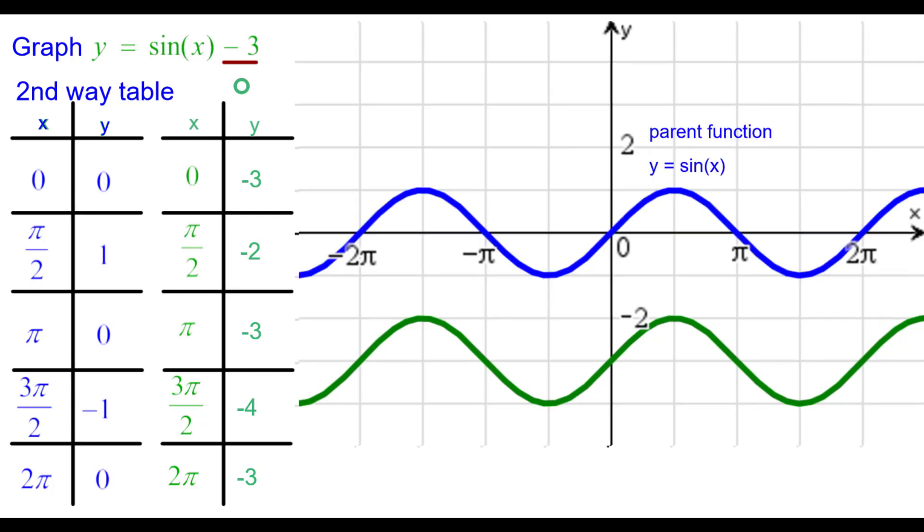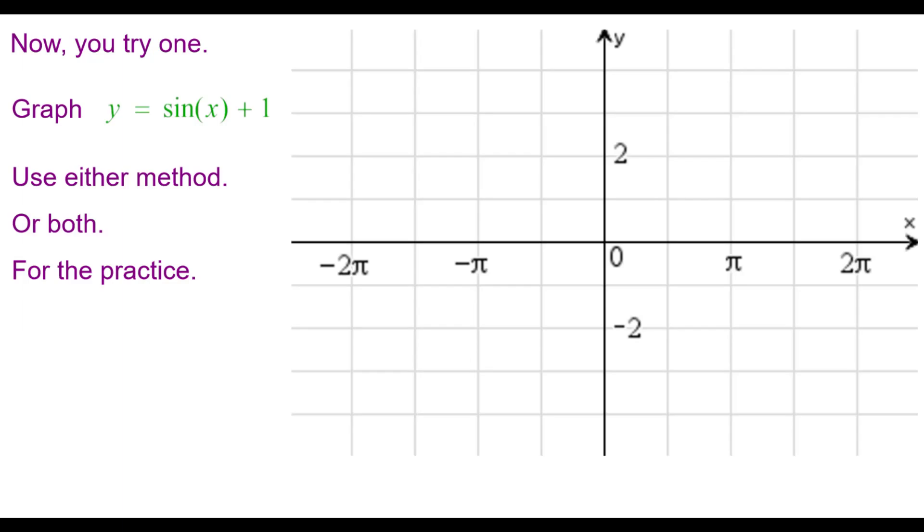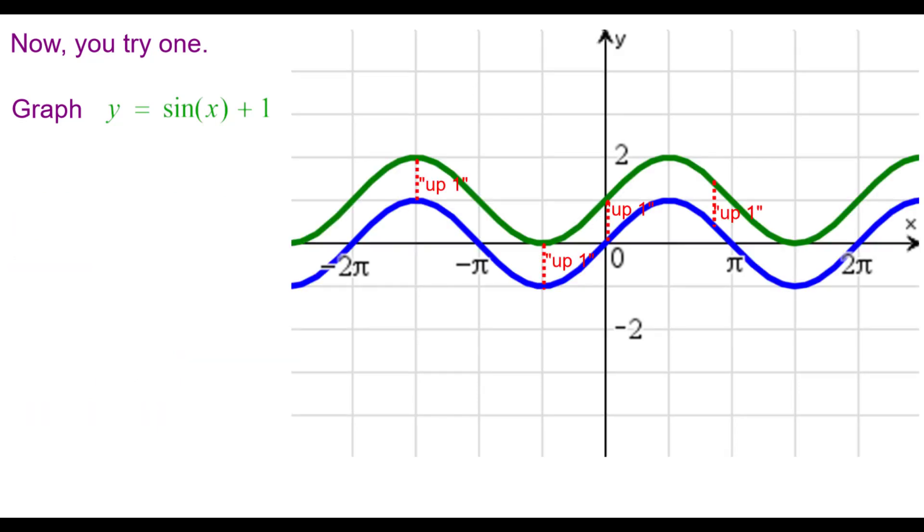Comparing it to the parent function. Now you try one. Graph y equals the sine of x plus 1. Use either method or both for the practice. Pause as needed. Resume when you're finished. And you can see the answer is in green here. Comparing it to the parent function in blue. Every single point is shifted up 1 because of this plus 1 outside the function.